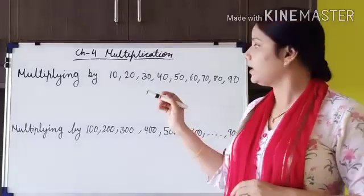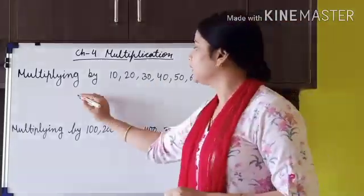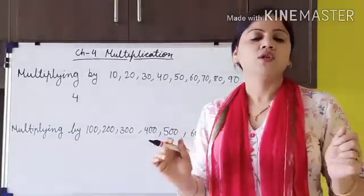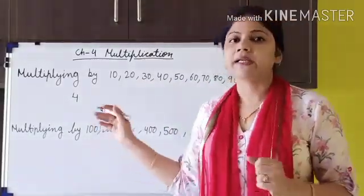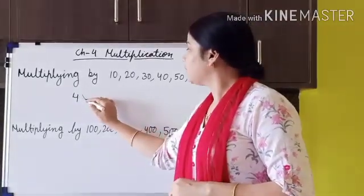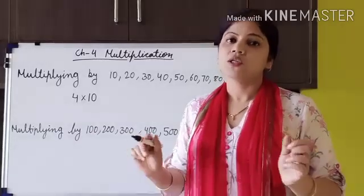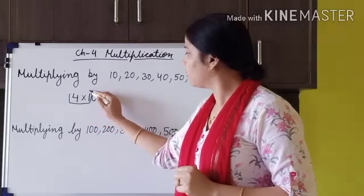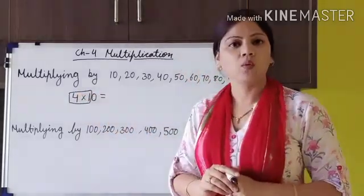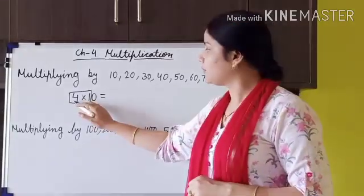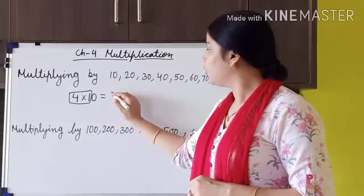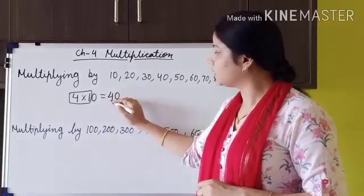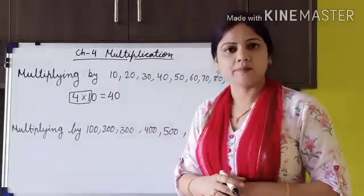If we have to multiply any number by these, let's take 4 as an example. Suppose we have to multiply 4 by 10. The shortcut method is to only multiply the non-zero digits: 4 multiplied by 1 — leave the 0. 4 ones are 4. Then put this 0 after the product, and you get the answer.